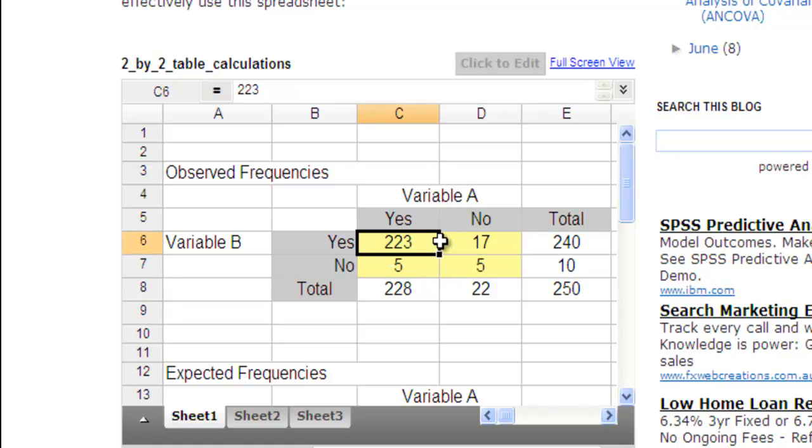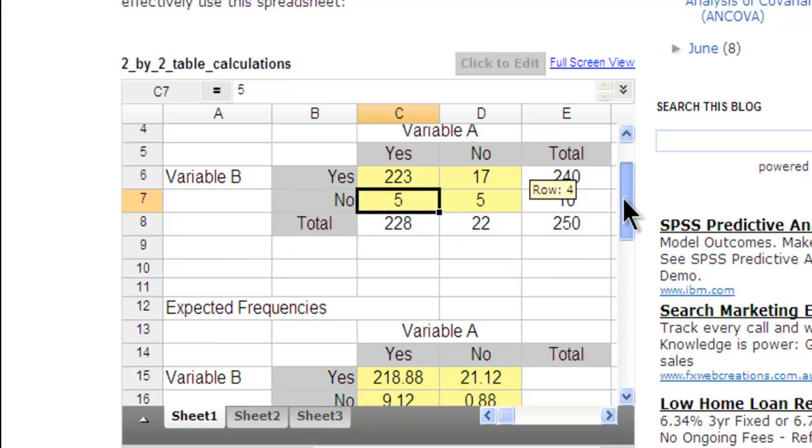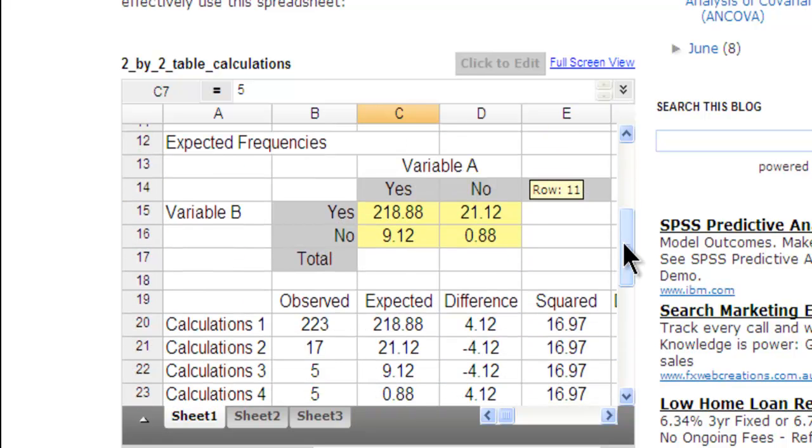So these are the observed frequencies found in the video, and that's what you would input here, and then it does all the calculations. I'll give you an example of how you can change that easily. This section here is the expected cell frequencies. So then we get expected cell frequencies.